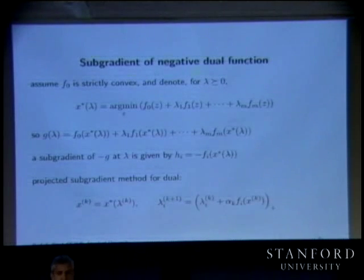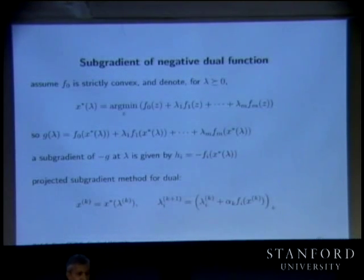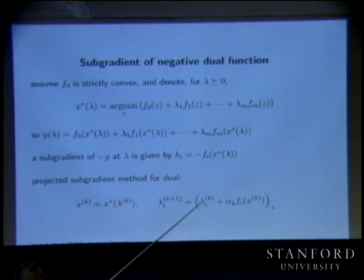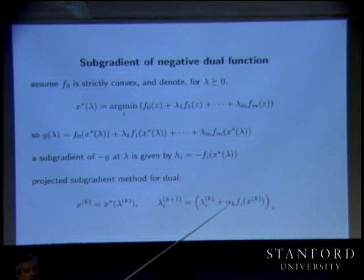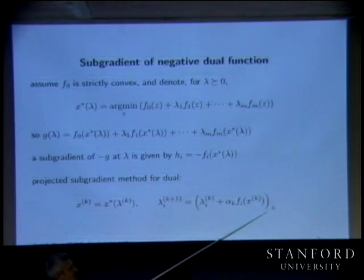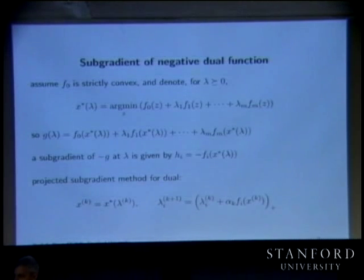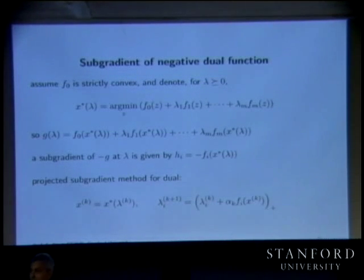If f_i is negative, that means you're under-utilizing resource i. What this says is: drop the price on that resource. However, if the new price goes under zero — which would encourage violating inequalities rather than satisfying them — then you just make the price zero. So if the i-th inequality is going to be non-tight at the optimal point, that price is going to go to zero.